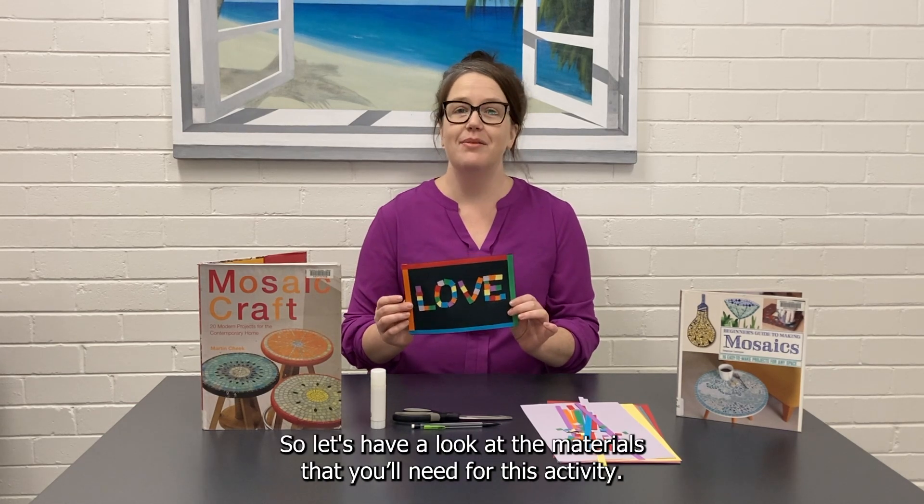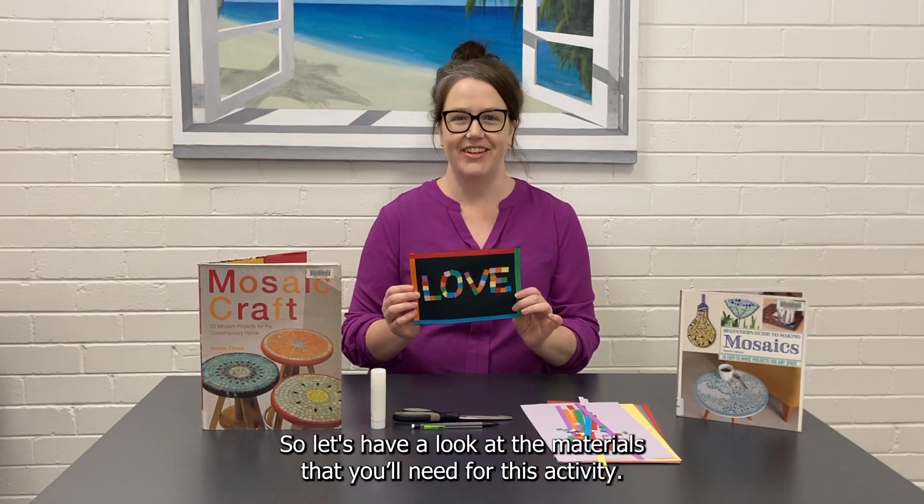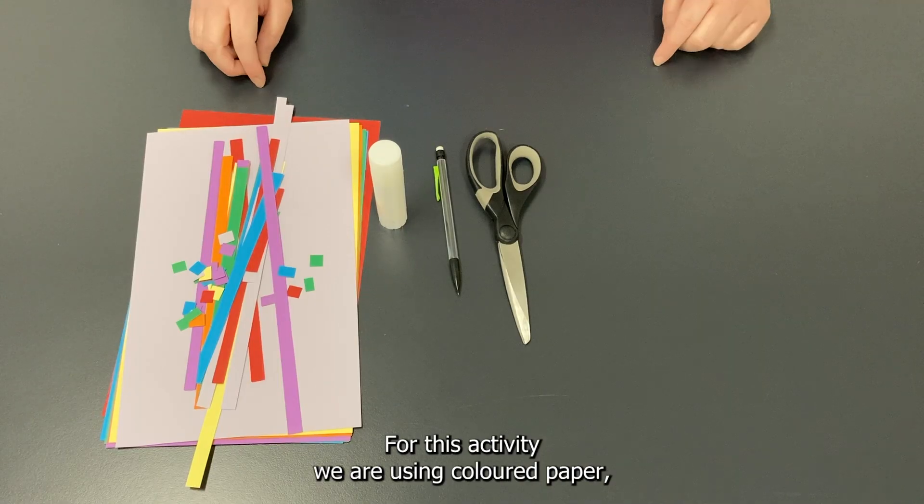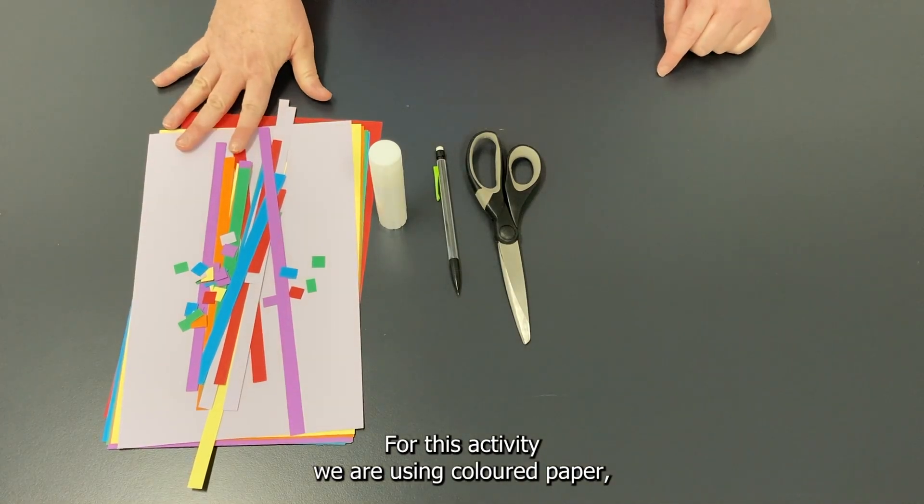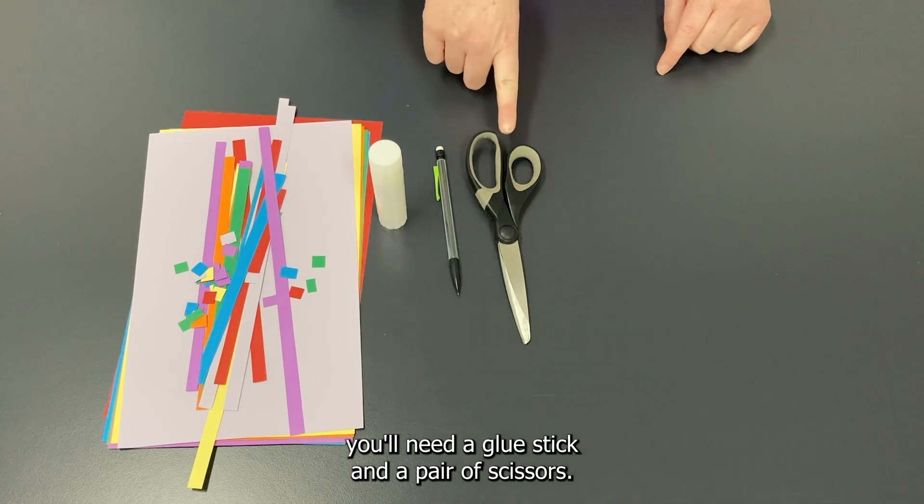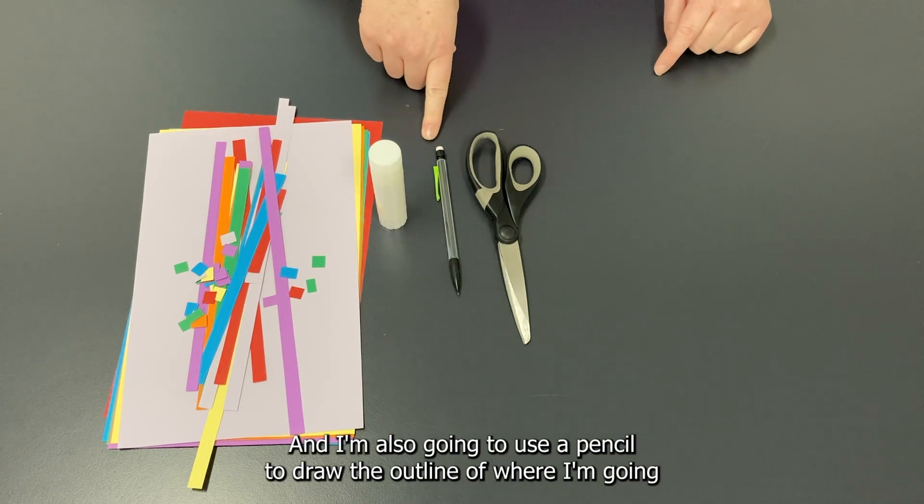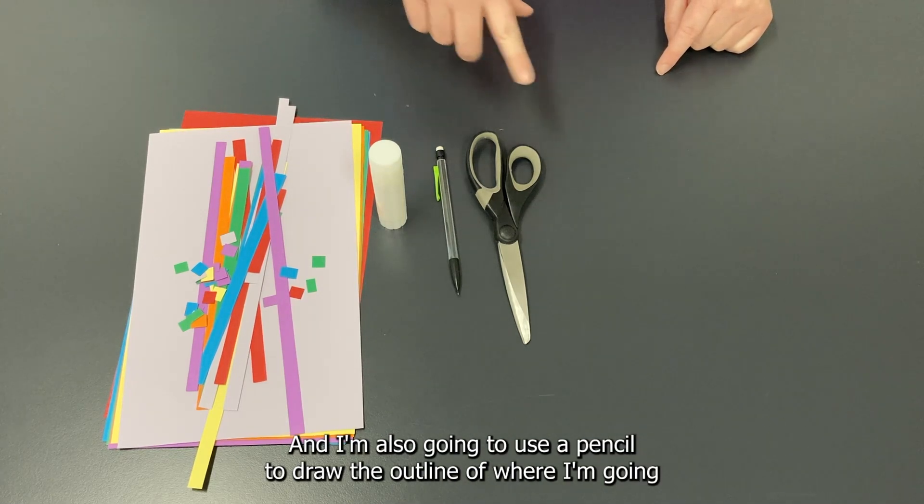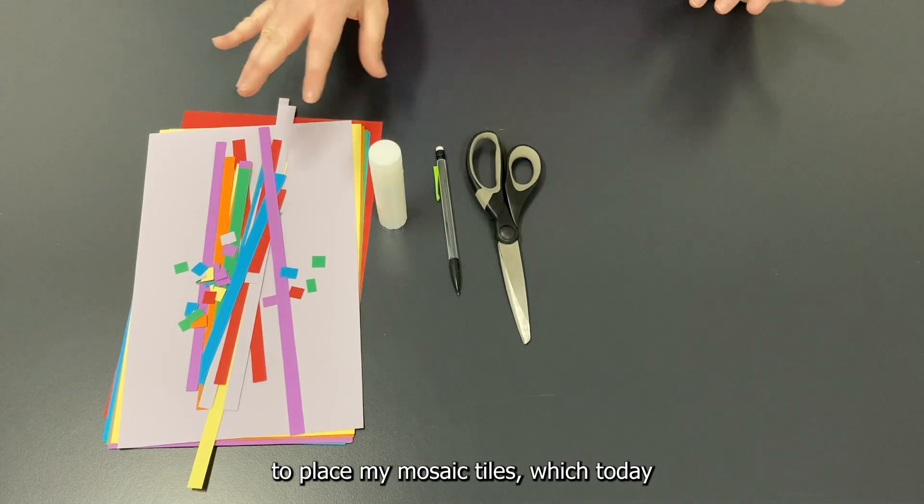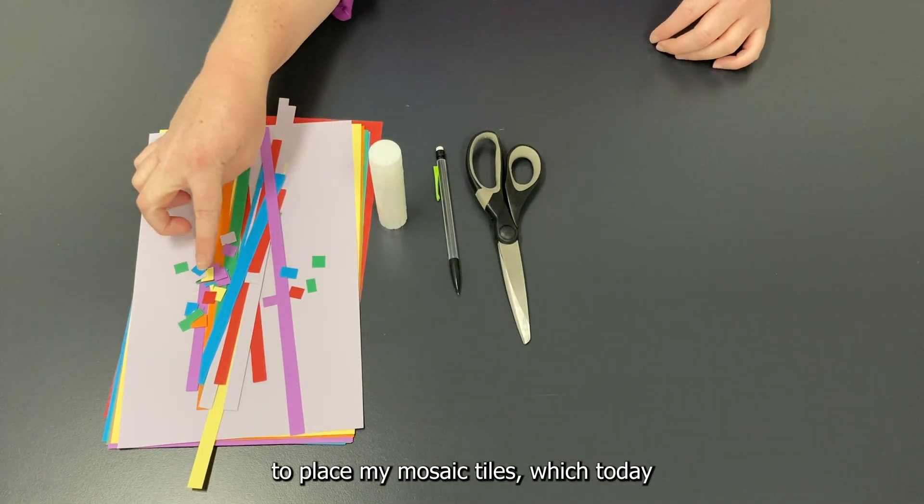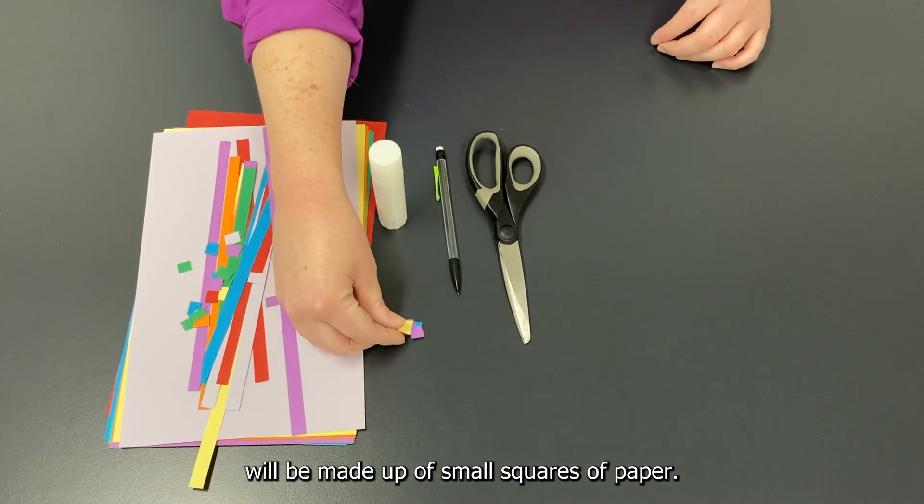So let's have a look at the materials you'll need for this activity. For this activity we are using colored paper, you'll need a glue stick and a pair of scissors, and I'm also going to use a pencil to draw the outline of where I'm going to place my mosaic tiles, which today will be made up of small squares of paper.